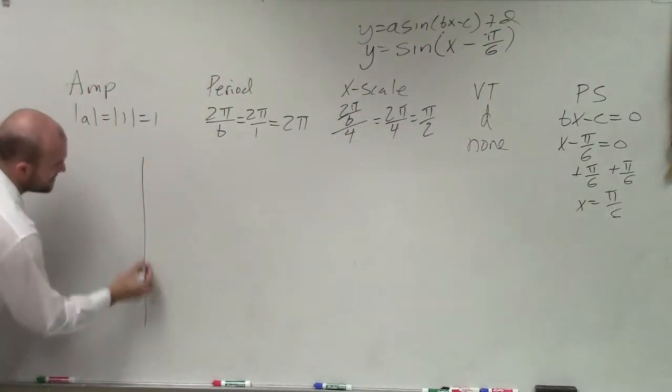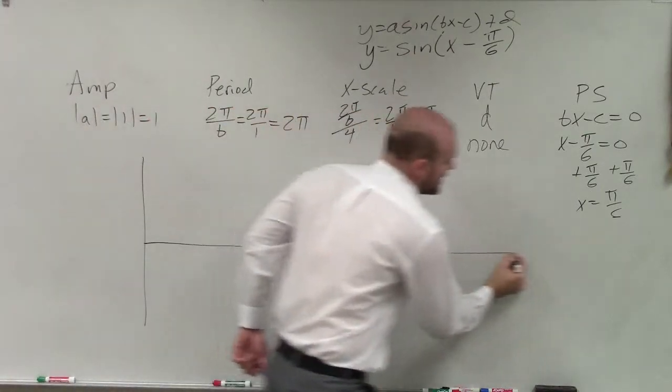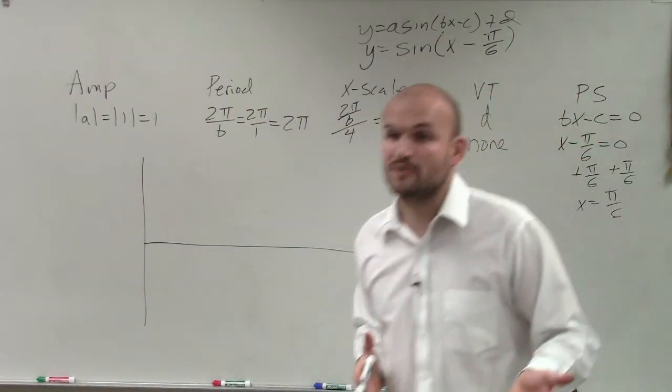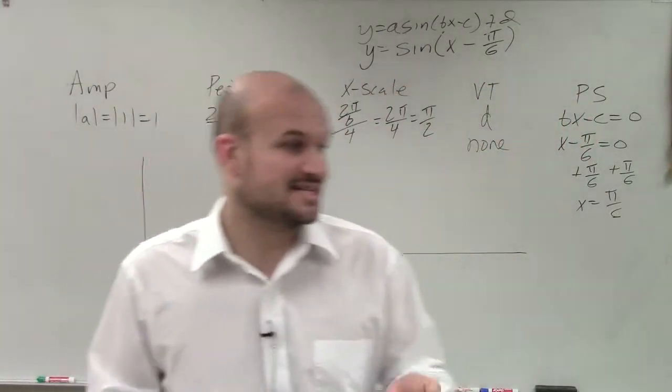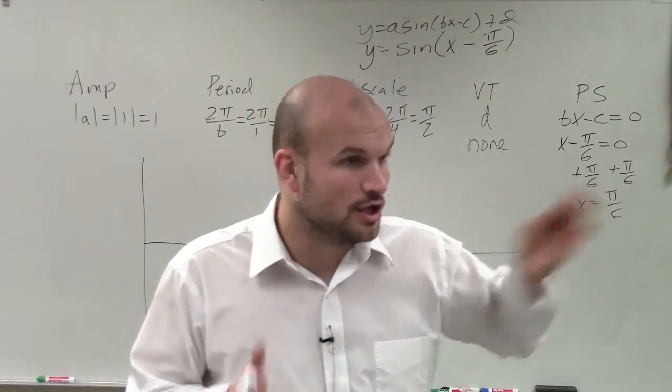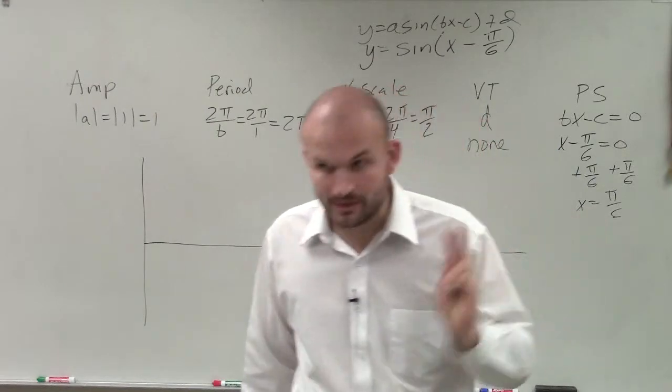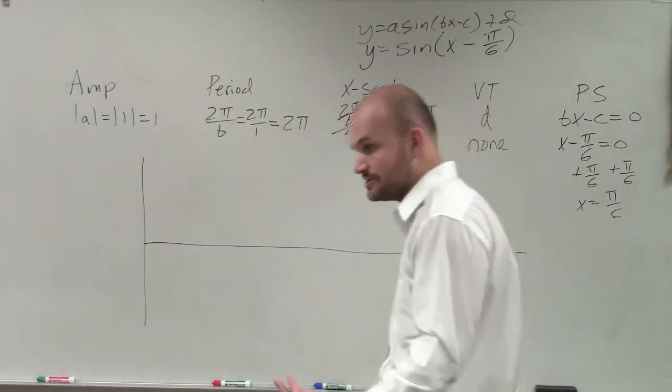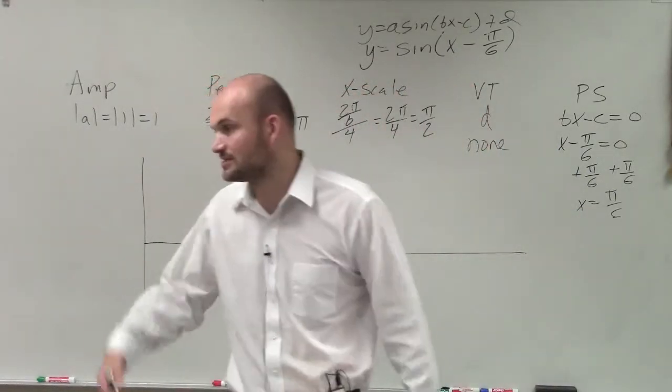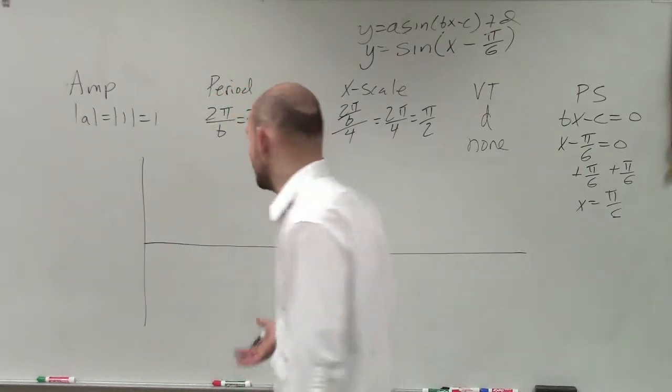So now, let's go and graph. Now remember, guys, this graph goes on and on and on forever. So how you guys are going to graph this is really dependent on you. You guys can do two in the positive direction. You can do one in the positive, one in the negative. But you need to include two periods. One period is not going to be enough. So make sure you include two periods, especially when you're writing down the information.